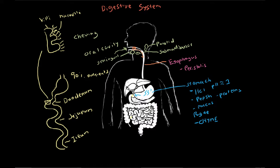From there, all the macromolecules we talked about earlier — the proteins, lipids, and carbs — are absorbed in the small intestine, and they move on to the next part, which is the large intestine.